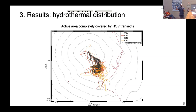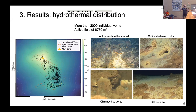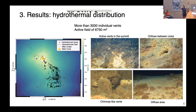In this map we observe that the area covered by the ROV is a bit larger than the active area, so we can assume the active area is quite well defined. With the limits of the crater, the summit, and the active area, it's around 6,700 square meters. We were able to identify more than 3,000 individual vents with high variability of morphologies — orifices between rocks, chimney-like vents at the summit with algae between vents, and also a high extension of diffuse venting.